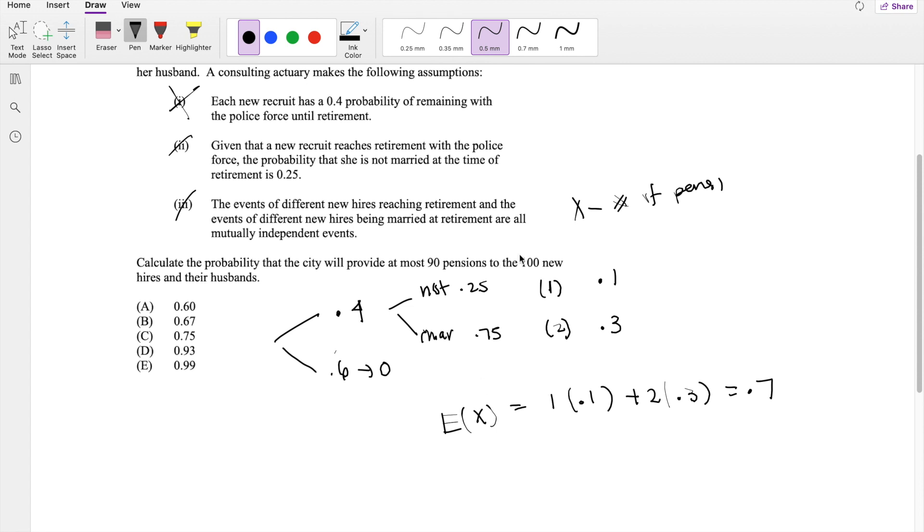If they give it to 100 new people, the expected value of X star for the 100 people is equal to 100 times 0.7, which equals 70.